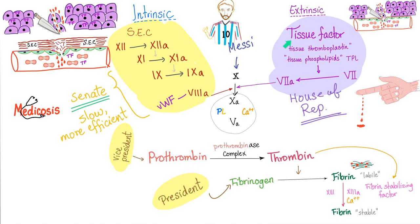Here is secondary hemostasis, also known as the coagulation cascade. We have an intrinsic pathway and an extrinsic pathway. What's the goal? Fibrin fibers. Where does fibrin come from? Fibrinogen. For fibrinogen to become fibrin, we need thrombin. Thrombin comes from prothrombin. Who activates prothrombin into thrombin? A committee of four members — two numbers and two words: factors 5 and 10, calcium, and phospholipid.